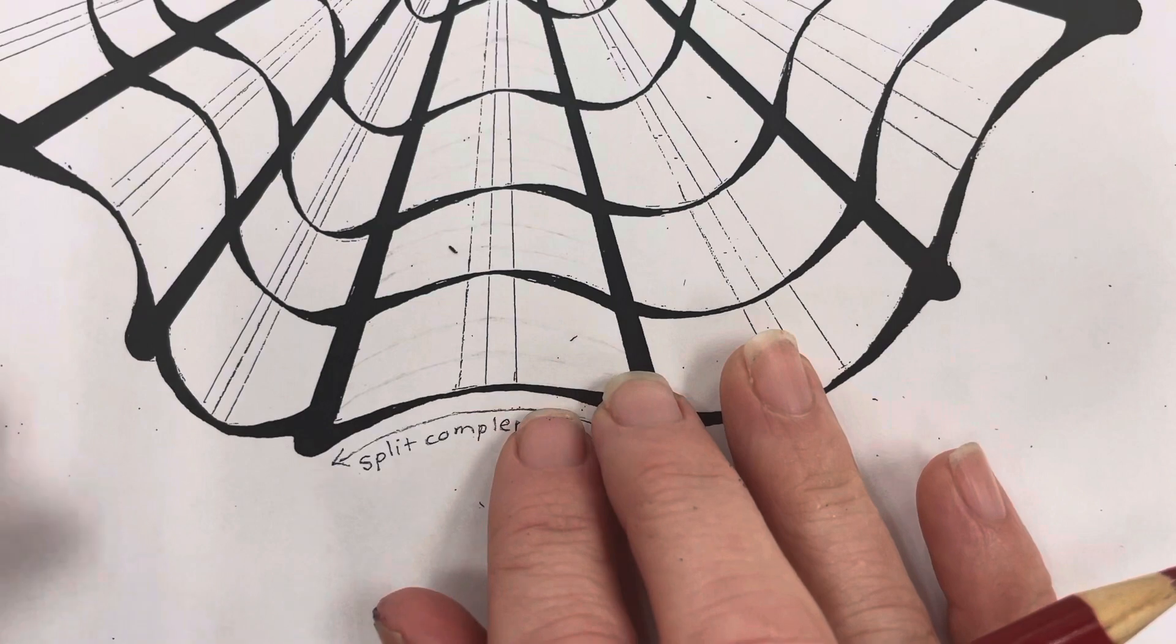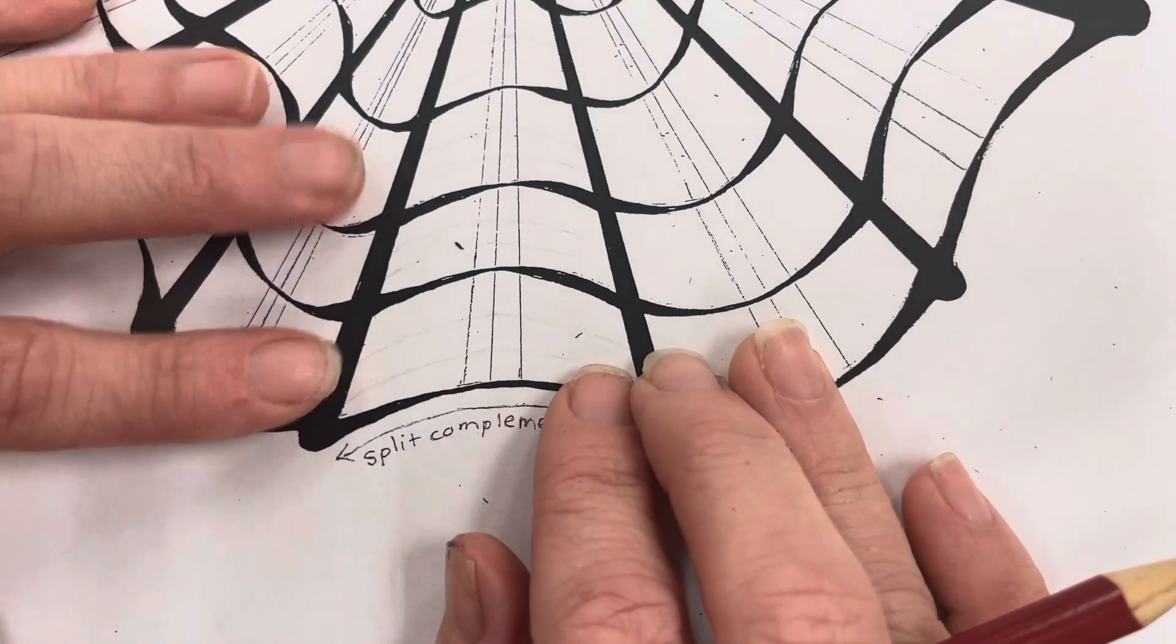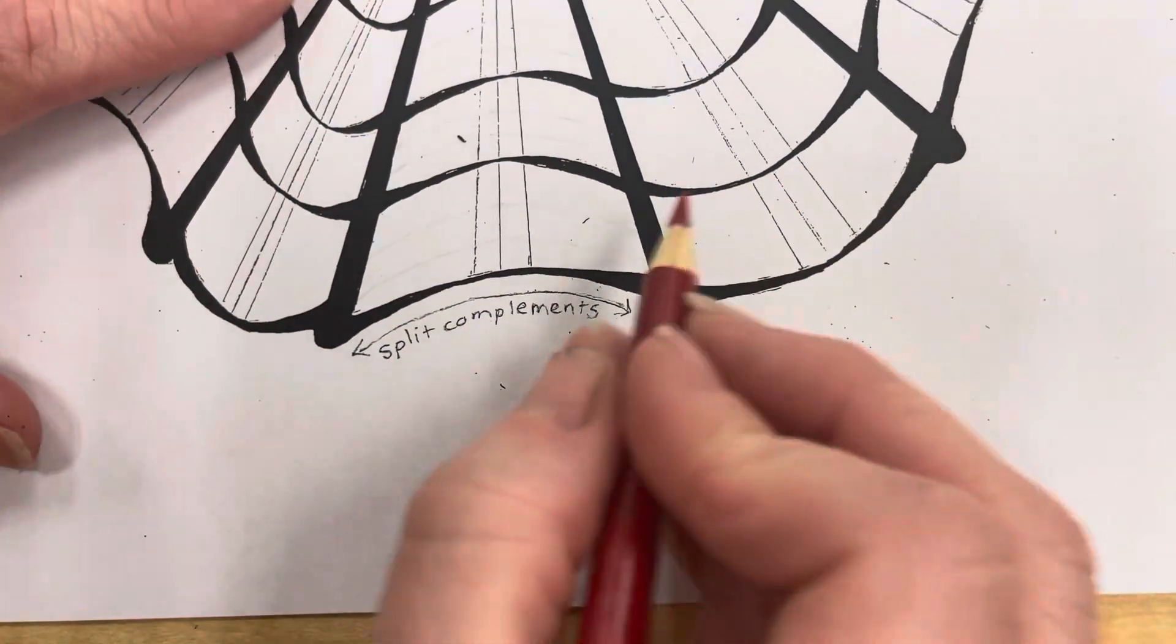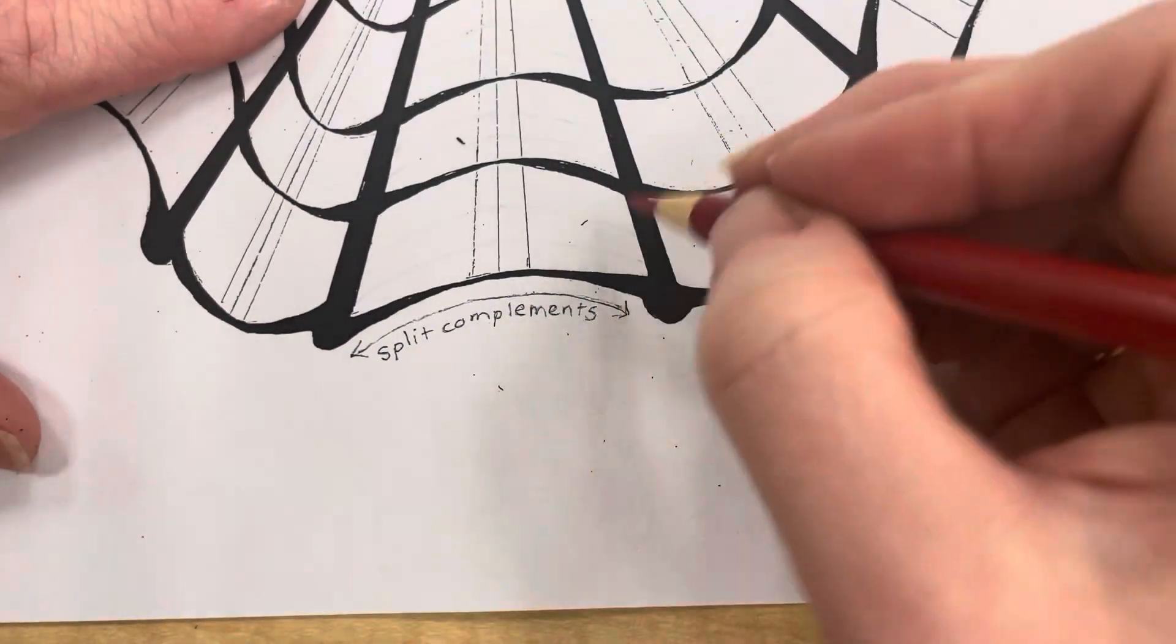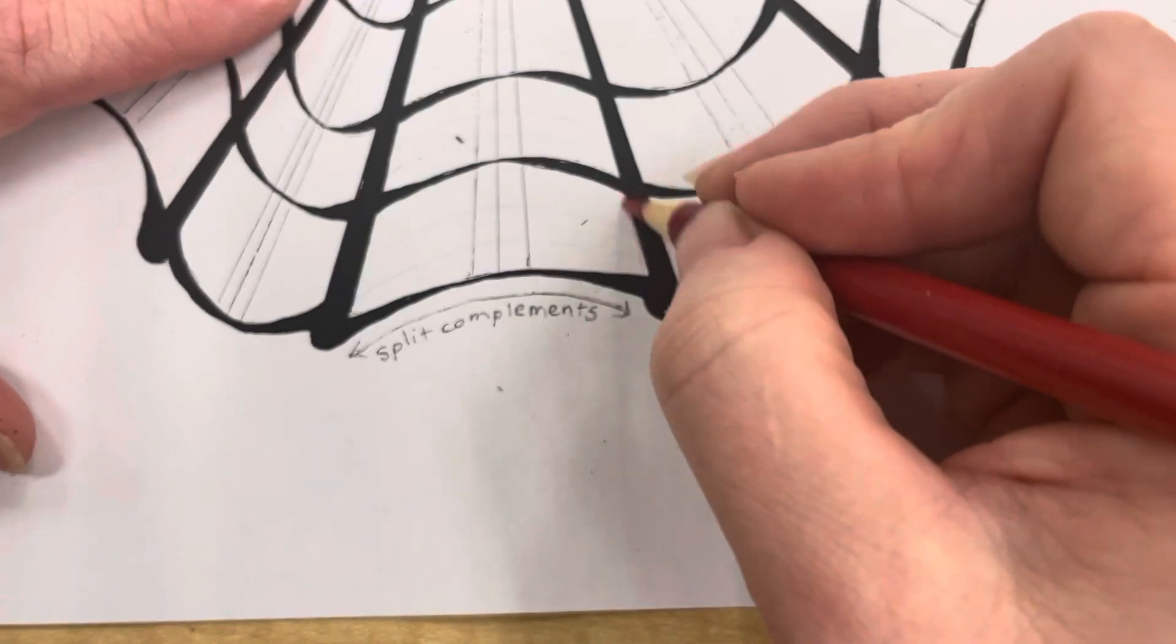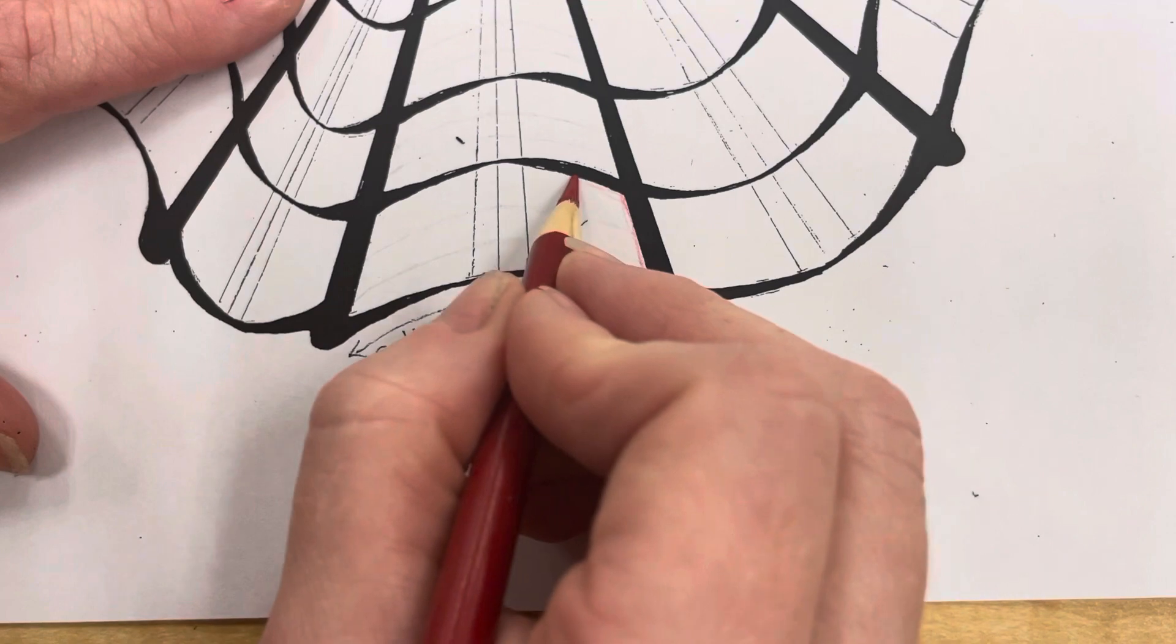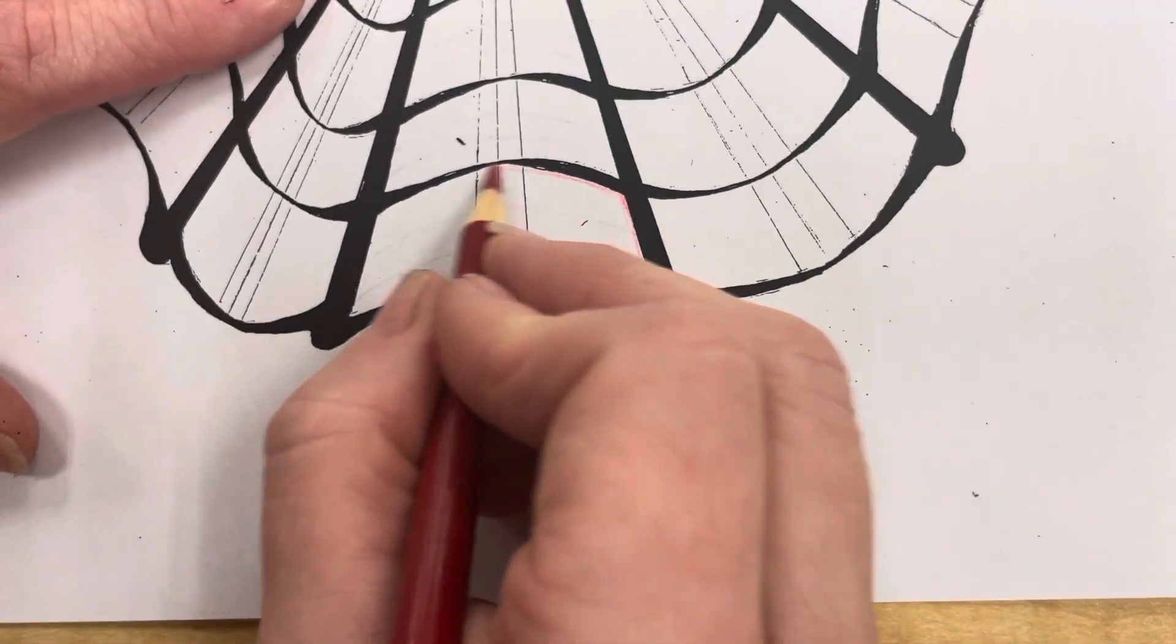Instead of using green right here I'm going to use red just so you can see it a little bit better on the complement section. So what you need to do is on the outside area you need to outline just real light.